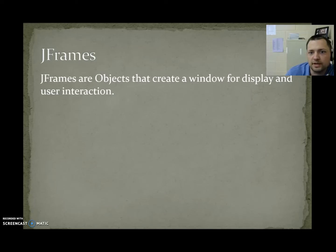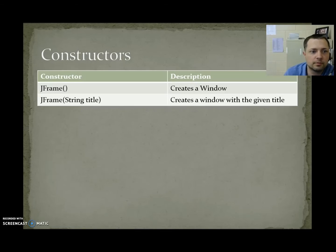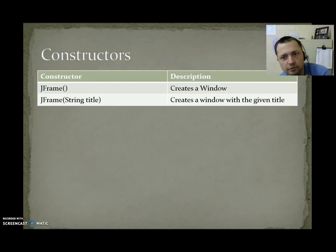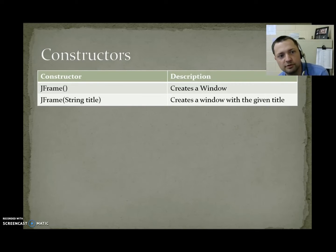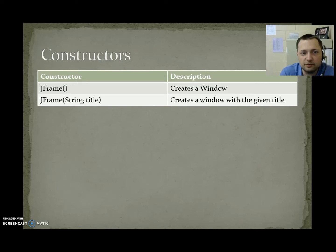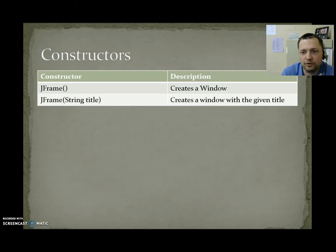JFrames are objects that create a window for display and user interaction. JFrame creates a window. The constructor we'll probably be using more often is JFrame(String), where the string you send it will be the title of the window — what appears on the title bar.